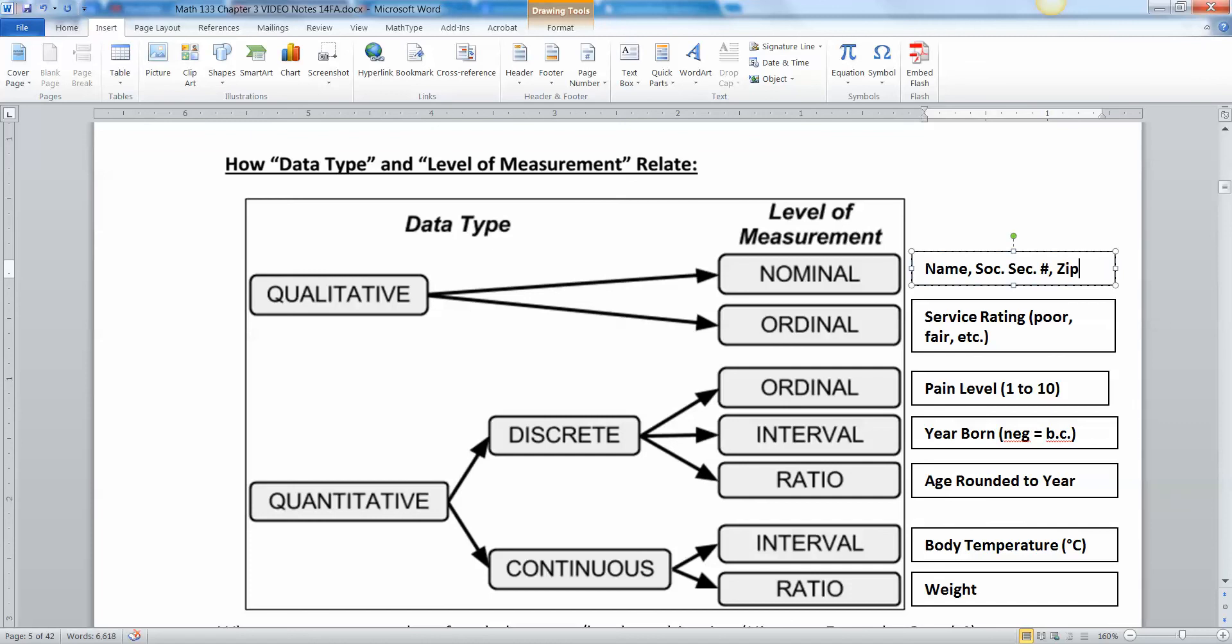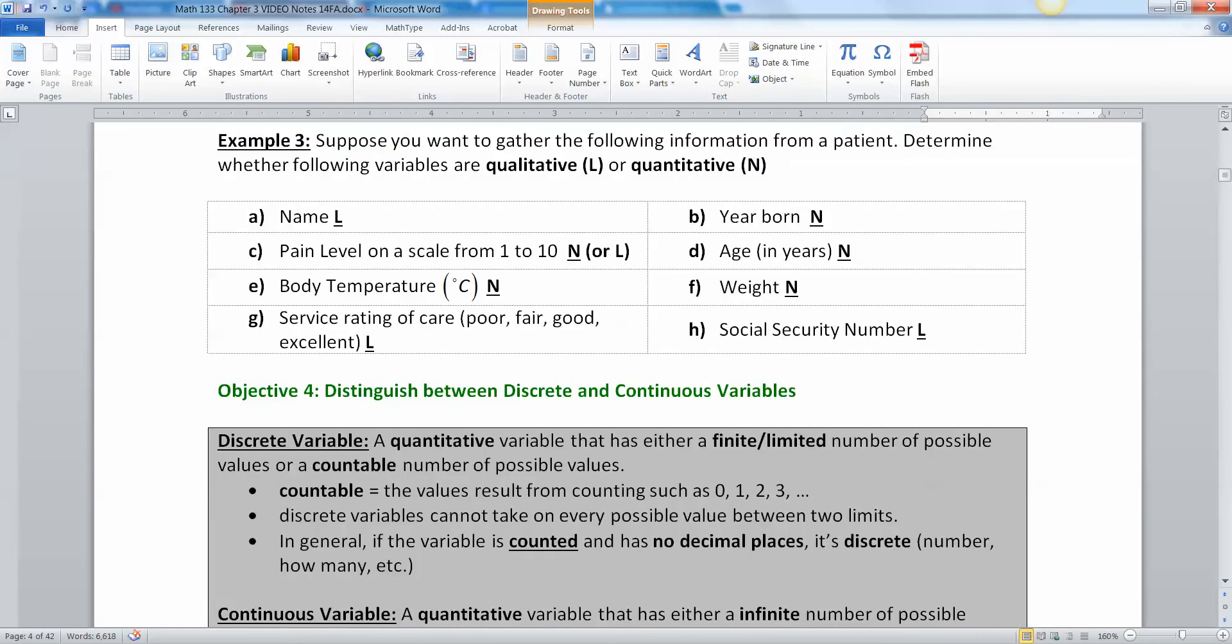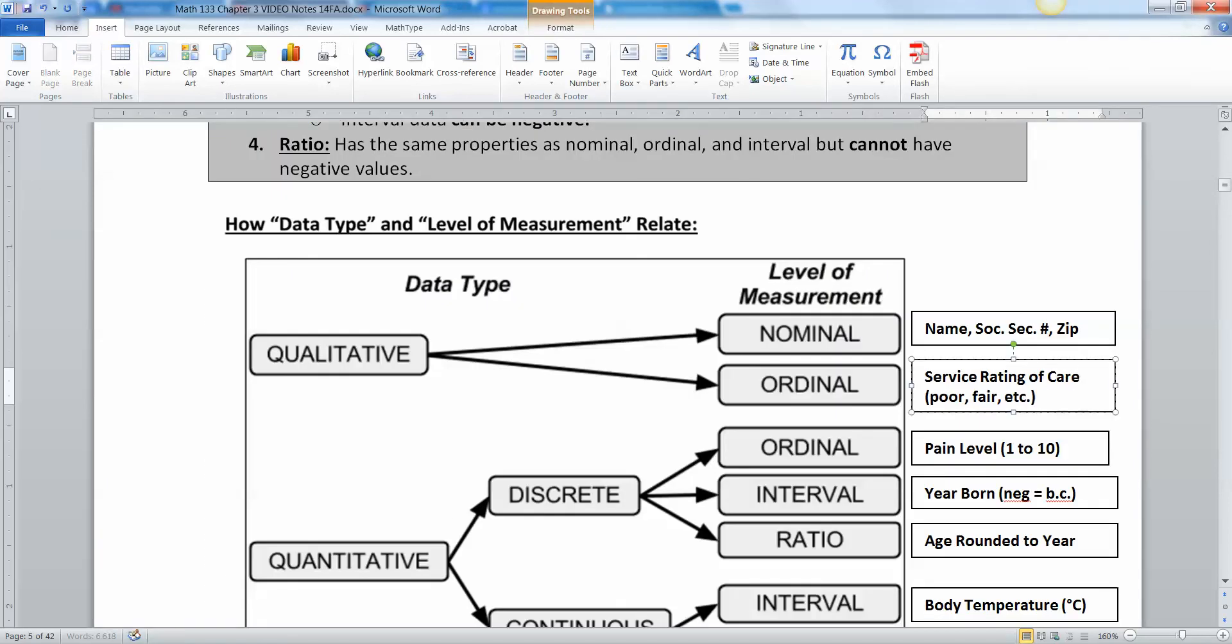Now qualitative ordinal, that would be words, qualities, but I can order them. So your service rating of care—poor, fair, good, excellent—that is qualitative because they're words, but it's ordinal because you know that excellent is considered better than poor. Gold, silver, bronze is the same thing. Gold medal, silver medal, bronze medal, that's ordinal. Blue ribbon, red ribbon, things like that.